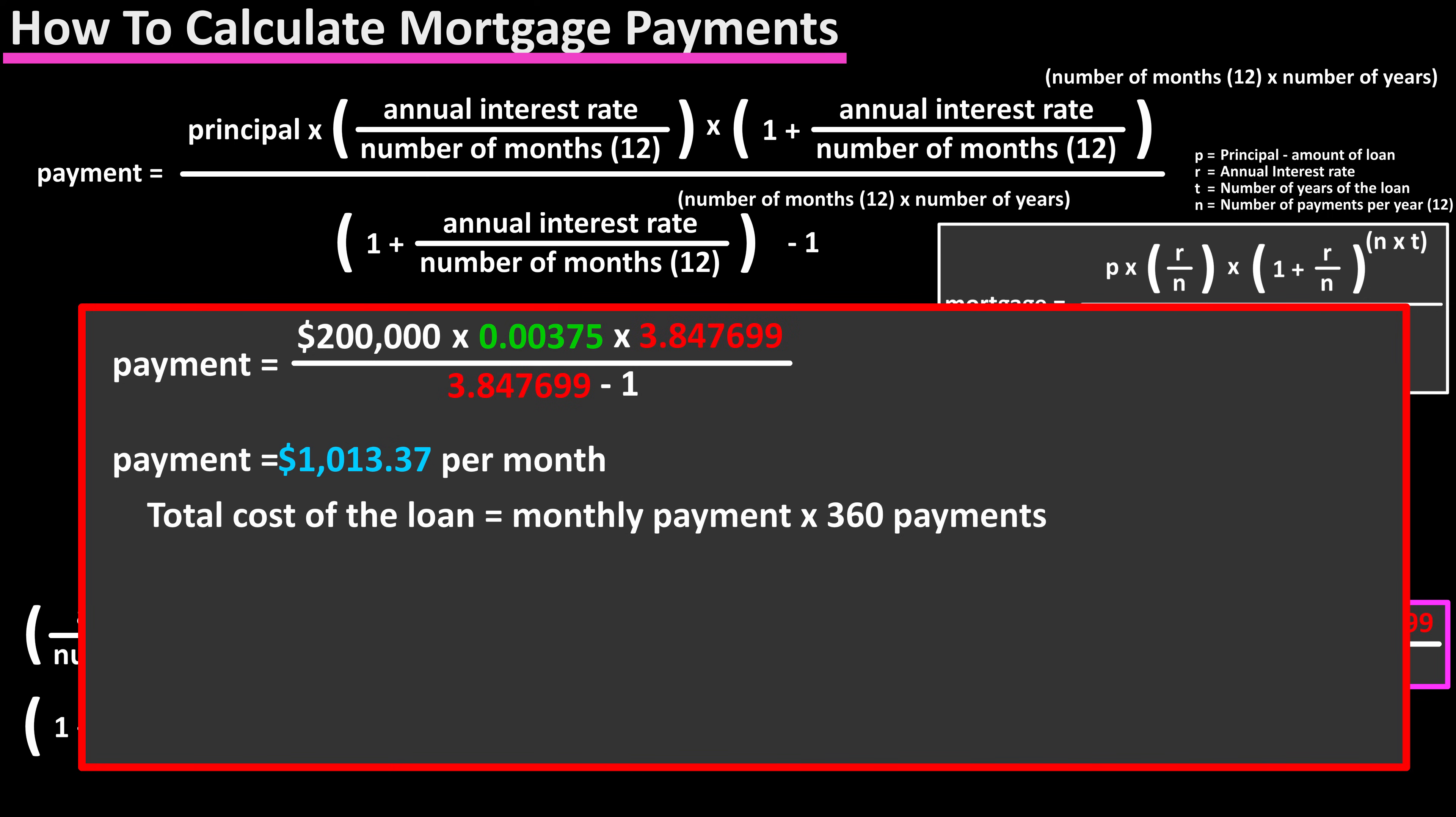One thing to take note of is the total cost of the loan, which is $1,013.37 times 360, the number of payments, and this gives us $364,813.20.